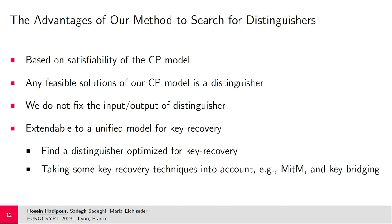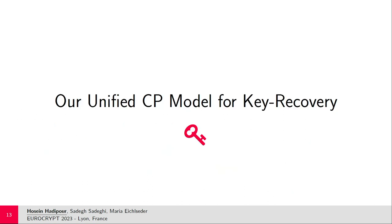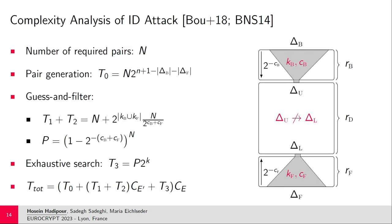The advantage of this method: it's based on satisfiability — you don't wait for an unsatisfiable model, any feasible solution is an impossible differential distinguisher, and input/output differences are not fixed. Since the model can be extended for key recovery, you can take advantage of key recovery techniques such as key bridging and meet-in-the-middle, embedding them into the model to find an optimum attack. This is the motivation for extending the model: automate everything and find a better attack.